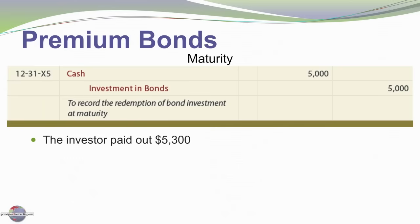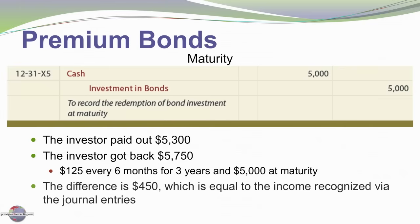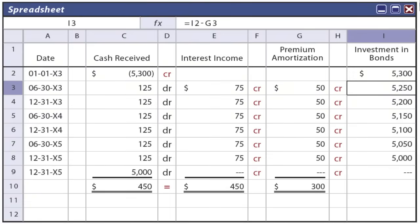Let's think about the cash effects. We invested $5,300 and got back $5,750 — that is, $125 every six months for three years, plus $5,000 at maturity. That's a difference of $450, which is indeed the amount of income we recognized under this method. Our journal entry showed $75 of interest income every six months for three years, or a total of $450. So the change in cash equals the total interest income recognized. Here's a spreadsheet also repeated in the textbook — it reveals the cash flow and activity for each payment, where the premium amortization is offset against the investment account reflecting the decline in investment.